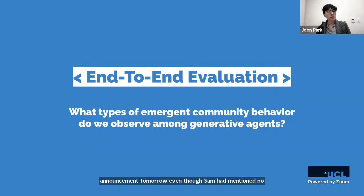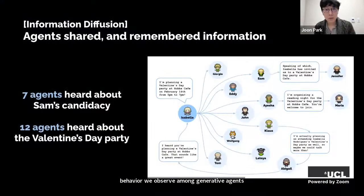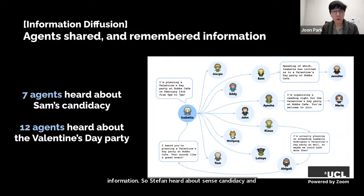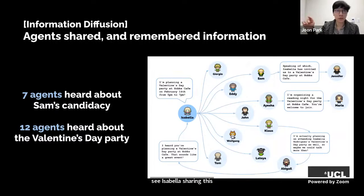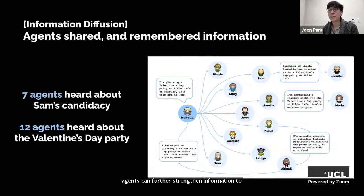We also conducted an end-to-end evaluation to understand emergent behavior. First, we find that agents shared and remembered information: seven agents heard about Sam's candidacy and twelve heard about the Valentine's Day party. You can see the path the party invitation took across the agent community — Isabella shares information about planning the party with Giorgio, Eddie, Sam, and others, who further spread it. Sam, for instance, told his wife Jennifer: 'Speaking of which, Isabella has invited us to the party.'